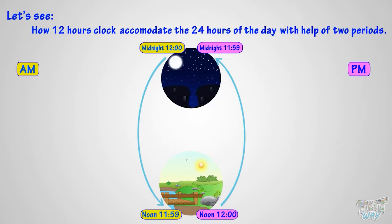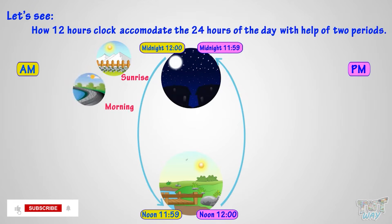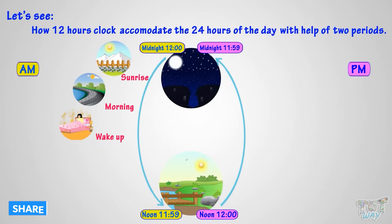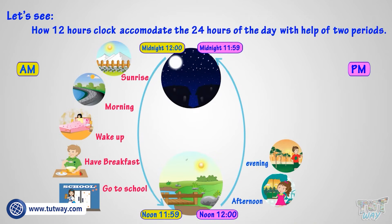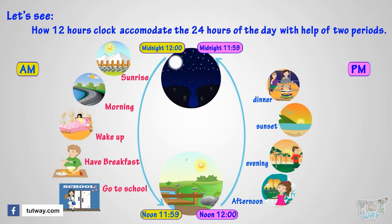Here are a few events to make it clear what time is a.m. and what time is p.m. Sunrise: a.m. Morning: a.m. Wake up: a.m. Eat breakfast: a.m. Go to school: a.m. Afternoon: p.m. Evening: p.m. Sunset: p.m. Eat dinner: p.m. Go to bed: p.m.